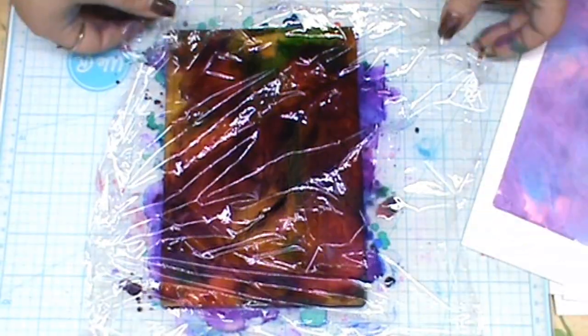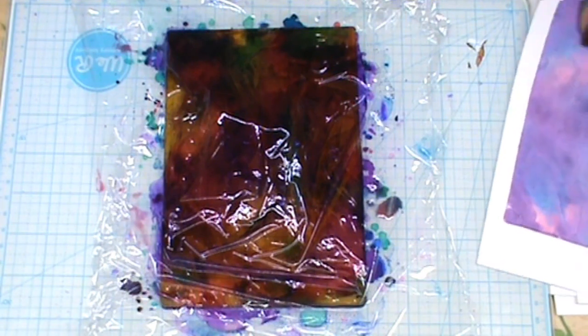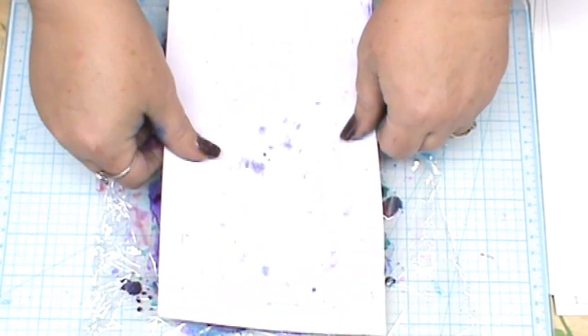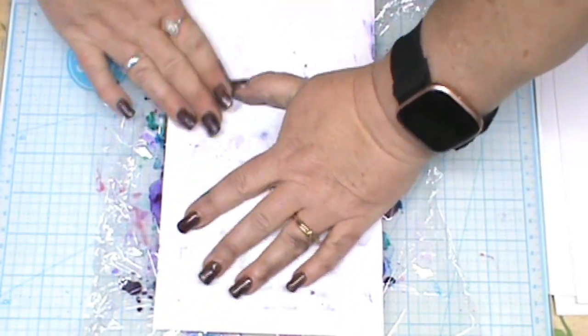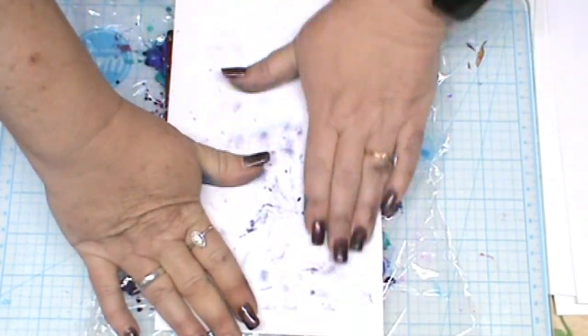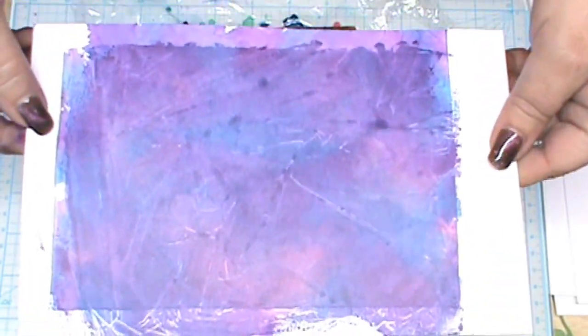Now we're going to double print that. I'm going to put the plastic wrap back on there, pick up the paper, and I kind of want to flip it. That way I'm not getting the same colors in the same areas. Smoothing it out over it. And there we go, double print, beautiful.